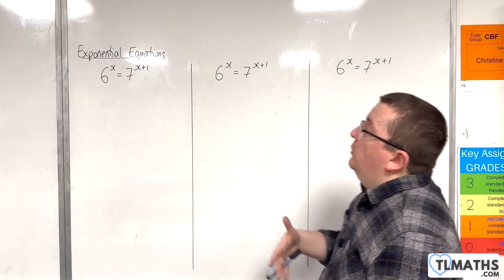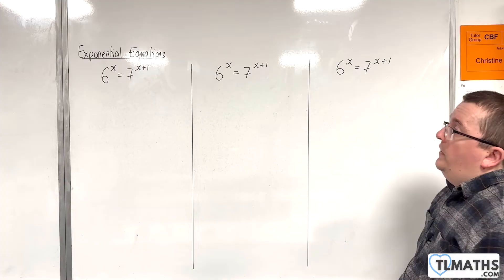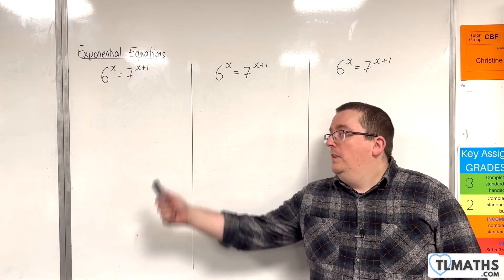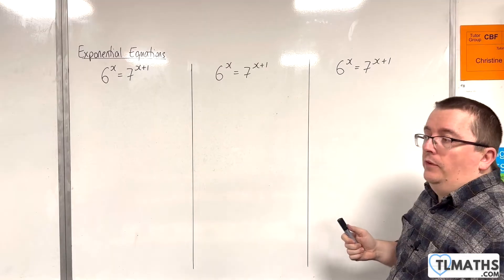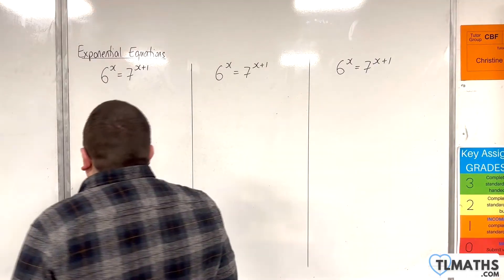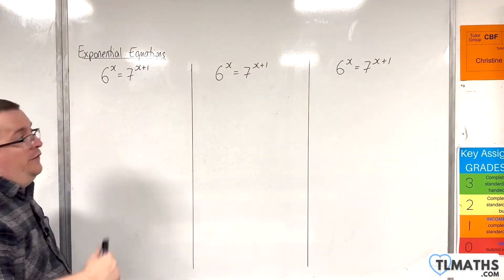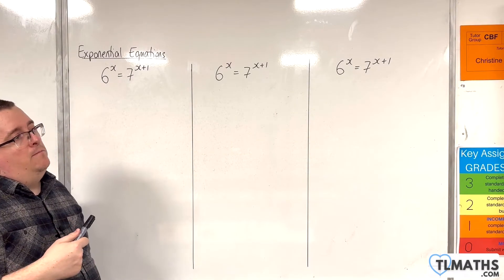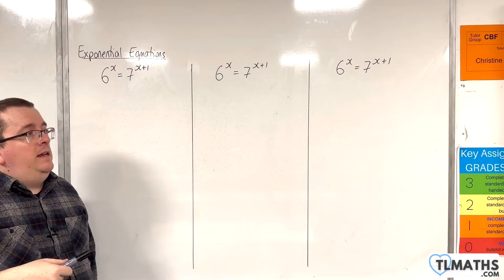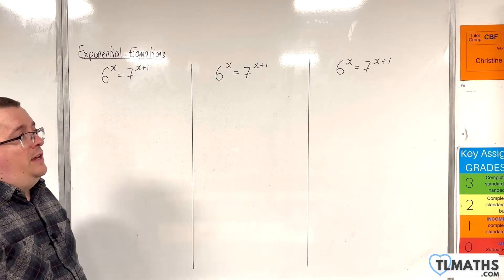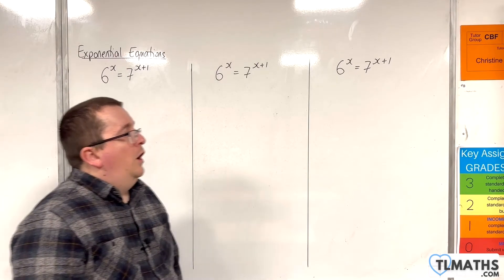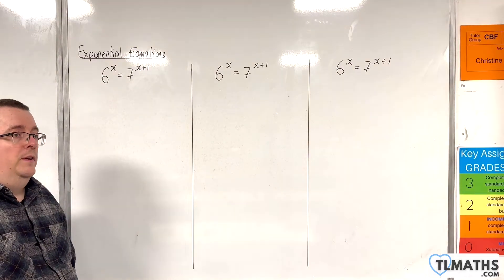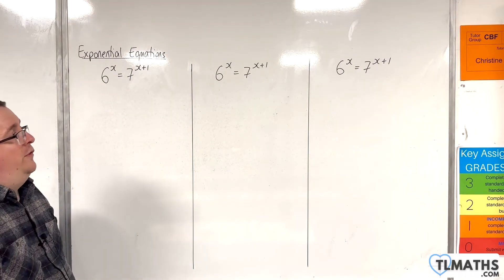In this video we're going to solve 6 to the x equals 7 to the x plus 1, and I'm going to solve it in three different ways, choosing different bases each time. This is really good practice, but also shows you that there is a choice you can make. It doesn't matter which base you use — you could use a completely different base and it would still be perfectly fine. I'm going to give you three options here.